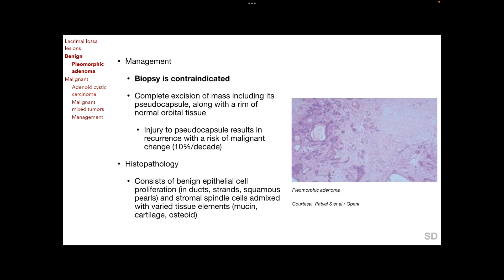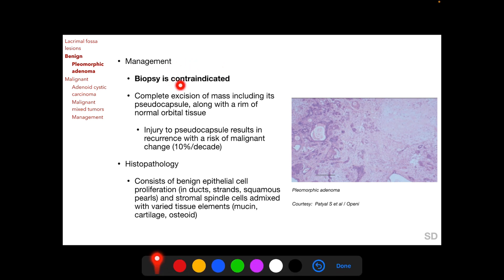When a patient presents with a mass lesion in the lacrimal gland fossa with a history of more than one year and without any pain, a biopsy is contraindicated. Only complete excision of the mass including its pseudocapsule along with a rim of normal orbital tissue should be performed, because violation of the pseudocapsule during excision results in recurrence with a risk of malignant change — 10% per decade of life.